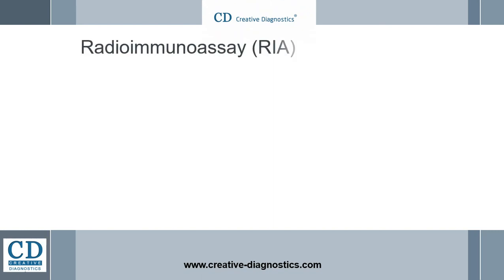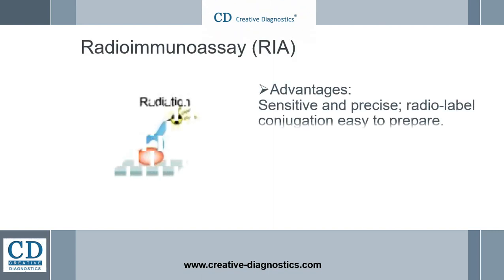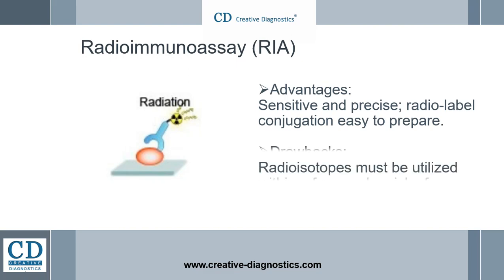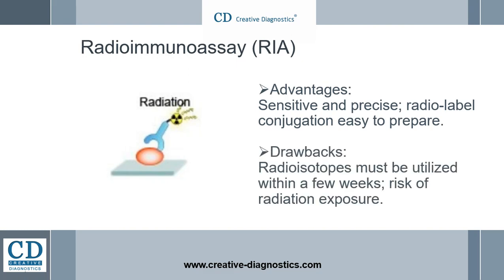Radioimmunoassay (RIA) is an immunoassay that uses radioactive isotopes, for example I-125, to label the antibody or antigen. It detects the radioactivity to measure the antibody-antigen complex with very high sensitivity.